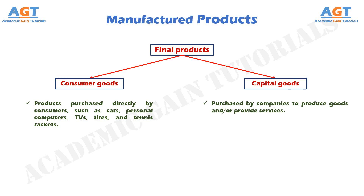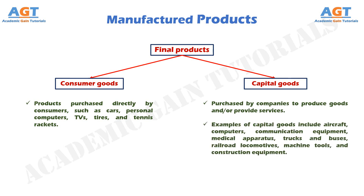Capital goods are those purchased by companies to produce goods and/or provide services. Examples of capital goods include aircraft, computers, communication equipment, medical apparatus, trucks and buses, railroad locomotives, machine tools, and construction equipment. Most of these capital goods are purchased by the service industries. Manufacturing accounts for about 12% of gross domestic product and services about 75% of GDP in the United States. Yet the manufactured capital goods purchased by the service sector are the enablers of that sector — without the capital goods, the service industries could not function.